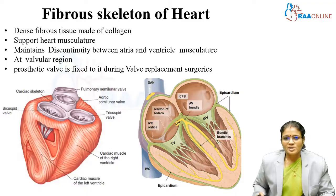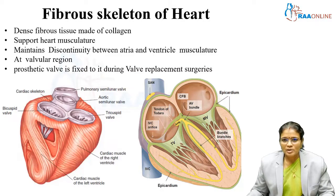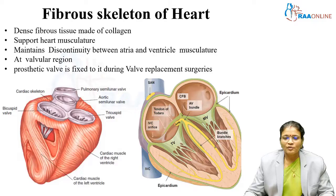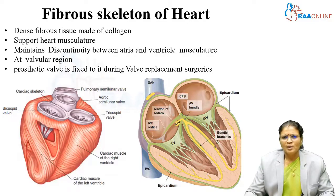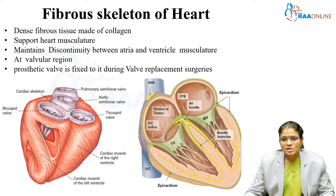What is the Fibrous Skeleton of the Heart? Just as we are all made up of a skeleton, the heart is also made up of a skeleton which is fibrous in nature, made up of dense fibrous tissue composed of collagen. Its function is to support the musculature of the heart and maintain discontinuity between atrial and ventricular musculature. It is present at the valvular region.